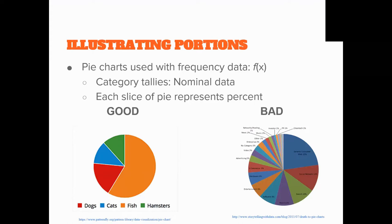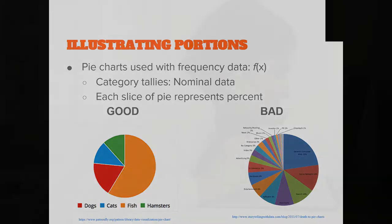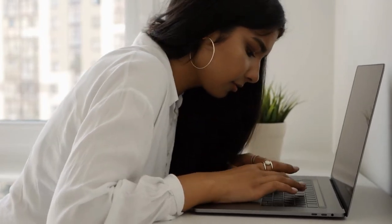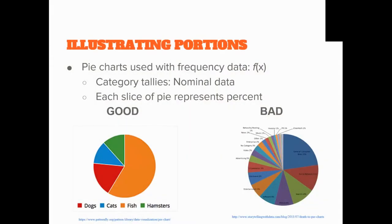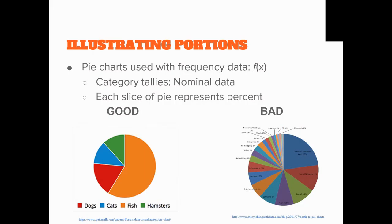Pie charts illustrate proportions. The circle represents 100%. You have your good and you have your bad. Can somebody tell me why this one's so much better? Exactly. Easy to read. You don't want to have a bunch of different categories there because it just makes it really difficult. You're using this to make sure that people understand what your data is. If you do have something where you have a whole bunch of categories, which happens sometimes, you could use a table or group them together. It depends on what you're doing.